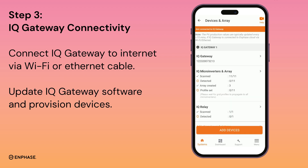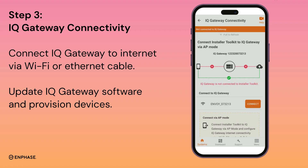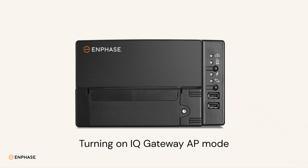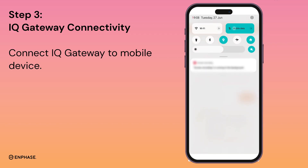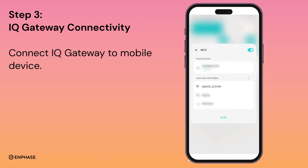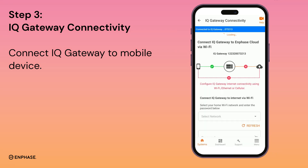After completing step 2, go to step 3 IQ Gateway connectivity. Before proceeding, turn on IQ Gateway AP mode. Press the AP mode button and the AP mode light will turn green. Now turn off your mobile data and turn on your Wi-Fi. Connect your phone with the Envoy signal. After connection, you will see a green tick between the mobile device and IQ Gateway.